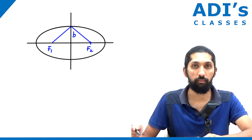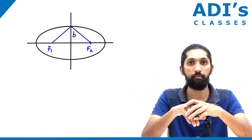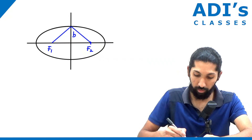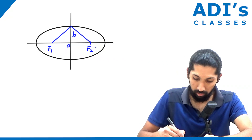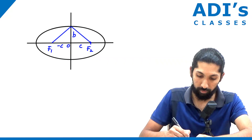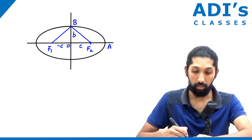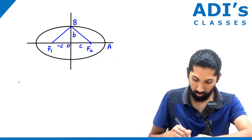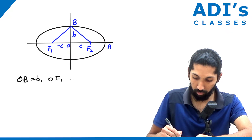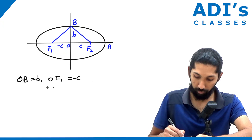In different books they will have different words and different meanings, but the overall meaning is the same. From the center of the ellipse, which is the origin: this distance is c, and this distance is −c. This is point B, this is point A. OB is equal to b. F1 is equal to −c and F2 is equal to c.